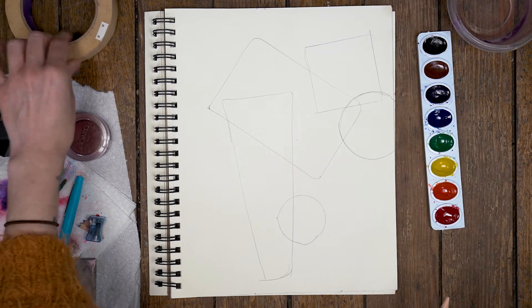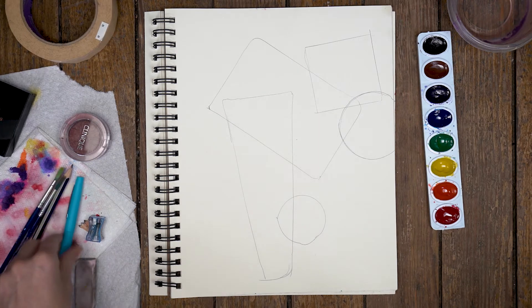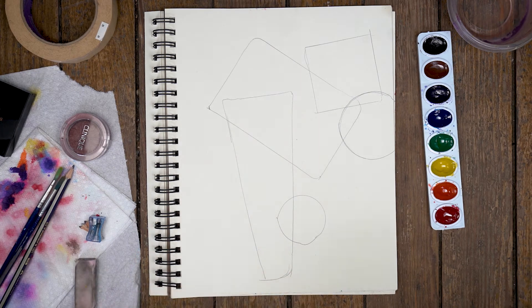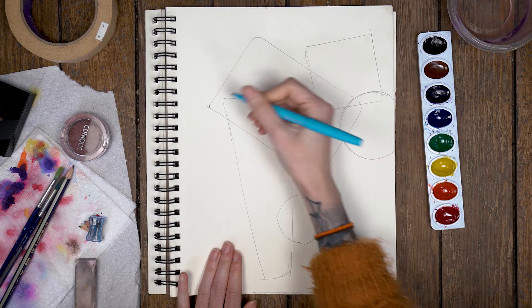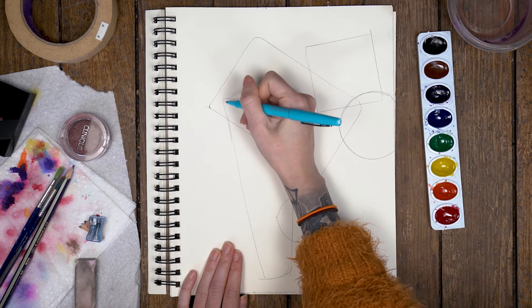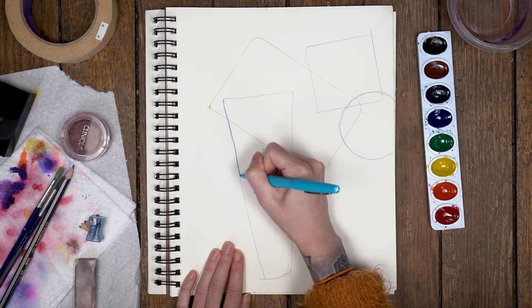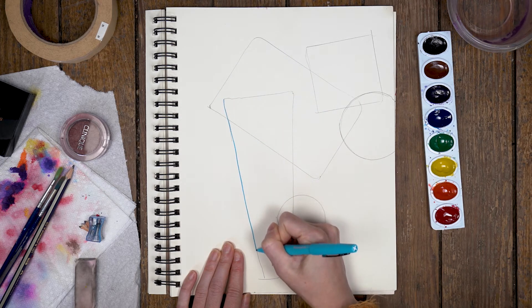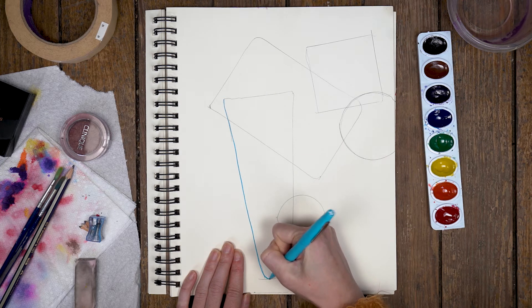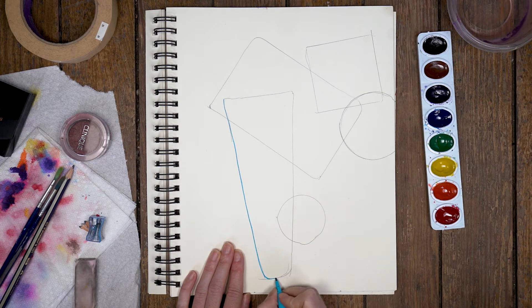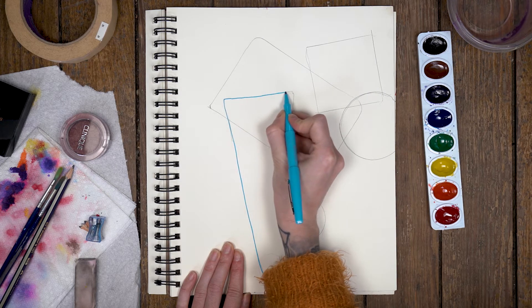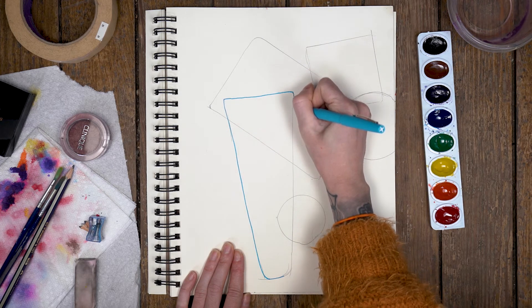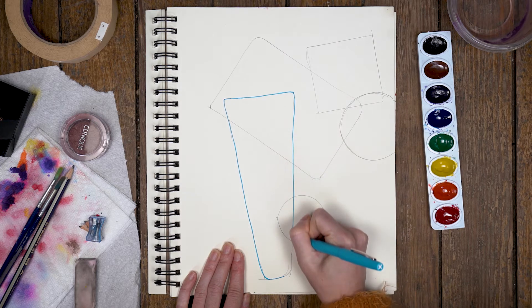Once you've got your shapes down, we're just going to outline them. For outlining, I'm going to be using this pretty blue pen that I love using, especially for outlining. I'm going to follow my lines best I can. Where there's some imperfections, we're just not going to trace those, and I'll erase them out with my eraser. Go ahead and outline all your shapes.